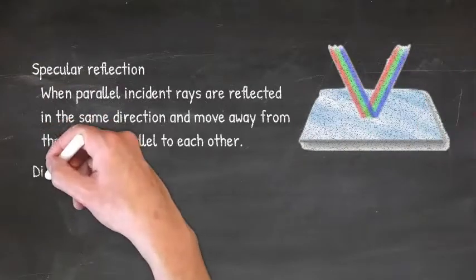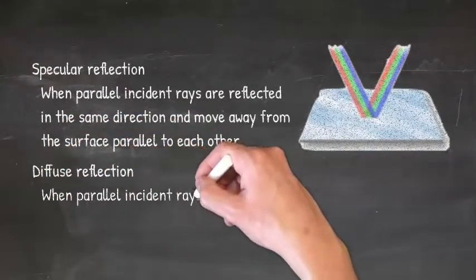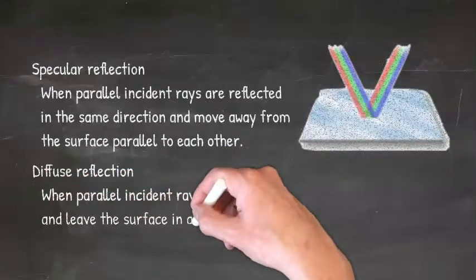Secondly, there is diffuse reflection. This is when parallel incident rays are scattered and leave the surface in all directions.